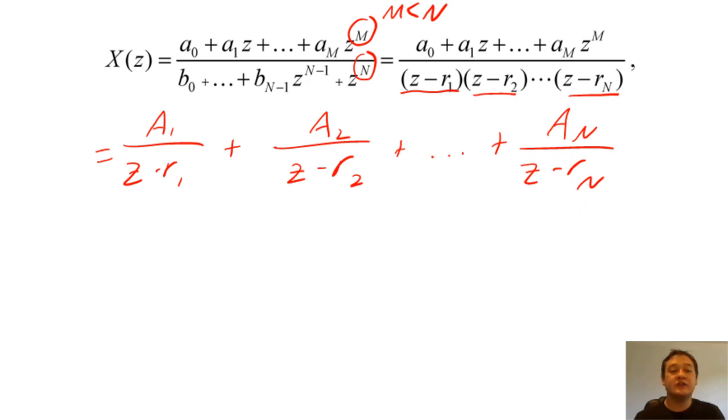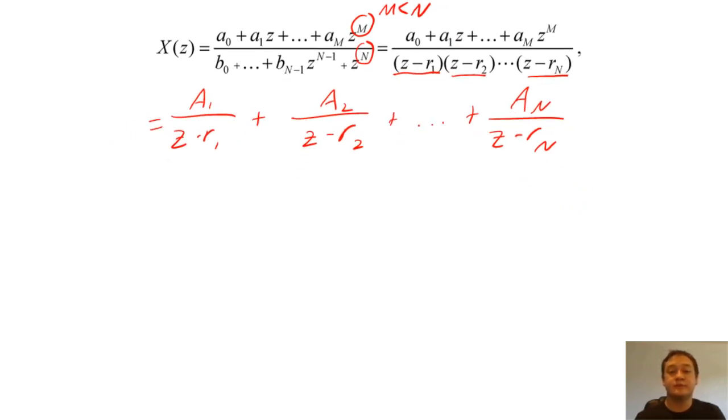The numerator of these components is called a residual. By multiplying both sides of this equation by one of the roots, we can find each residual by evaluating X of Z by the chosen root.